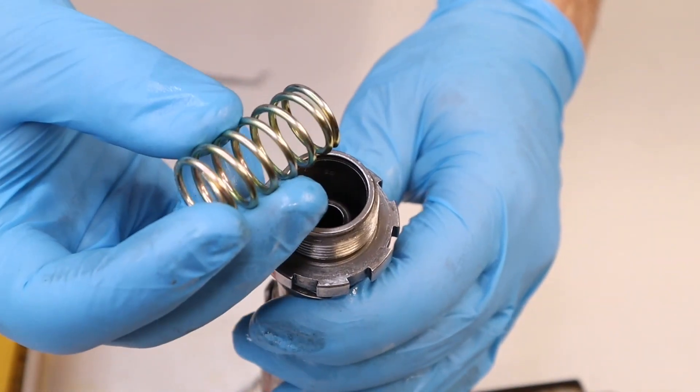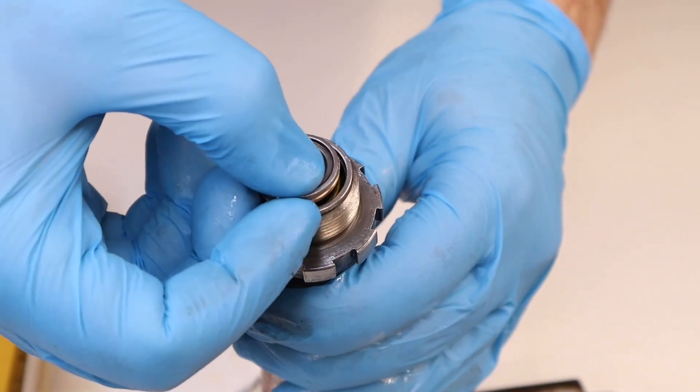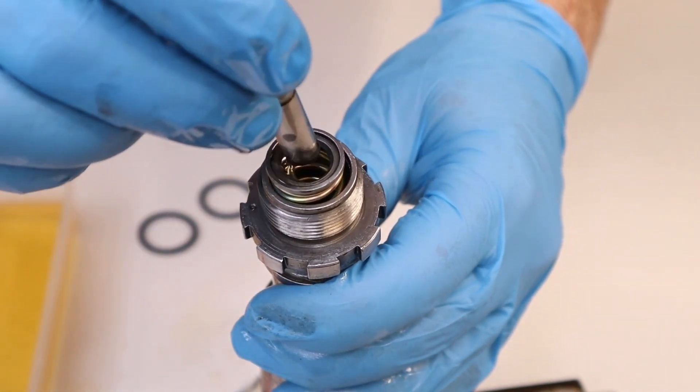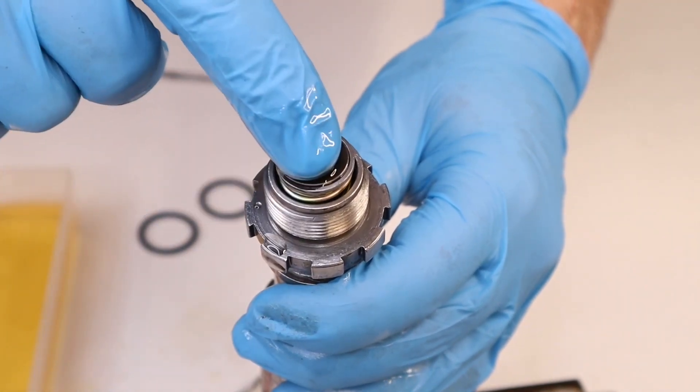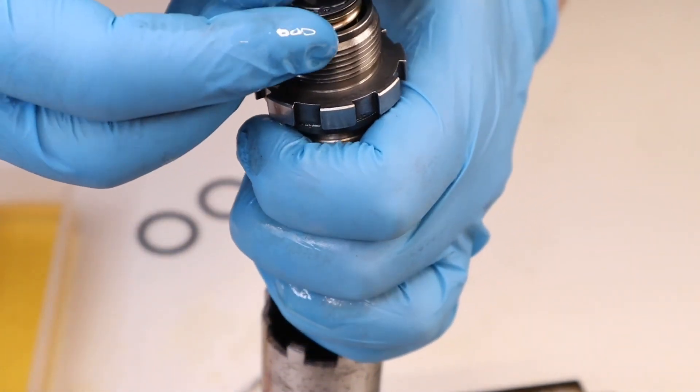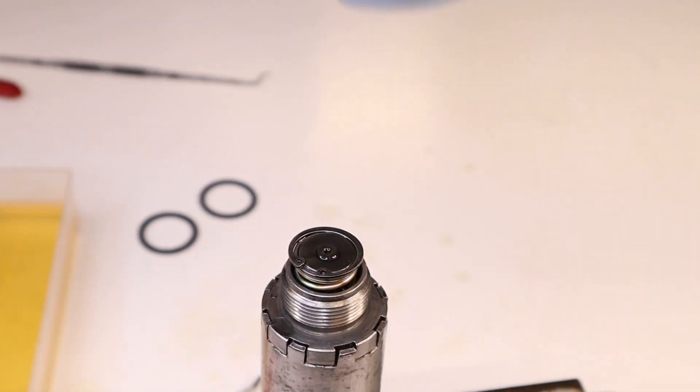So now the spring goes in, the main spring. That's the adapter for the piston. And the piston then you've got to line it up and slide it down the barrel. Lastly you've got to push that down so that you can put the circlip in.